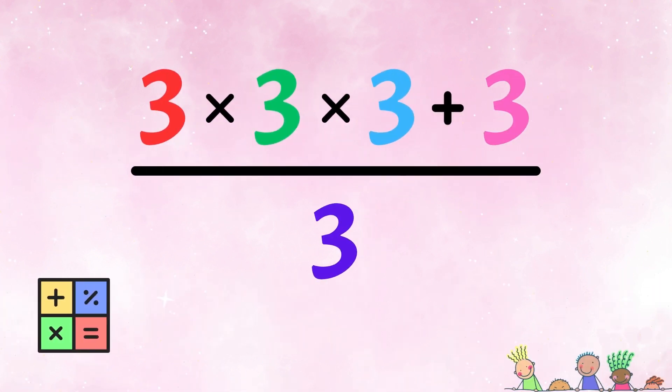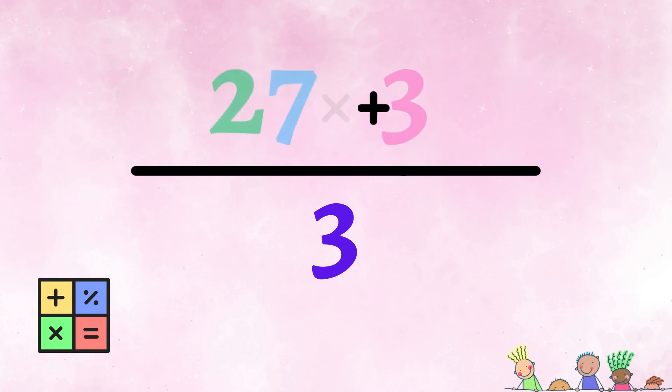The second variation requires a little more thought. Let's multiply the first three threes together, which gives us 27. We add 3 to it, resulting in 30. Take all of that, and divide it by the final three, which makes 30 divided by 3 equals 10. Awesome!